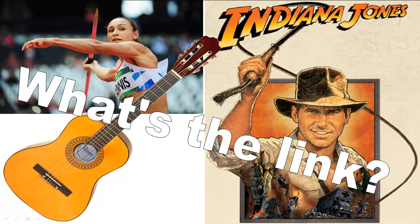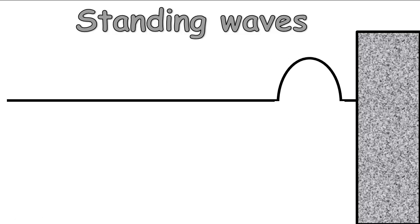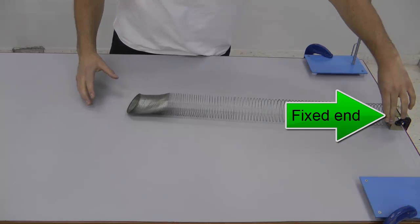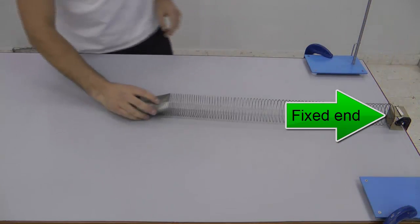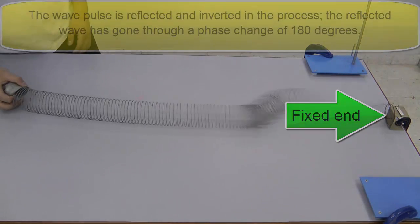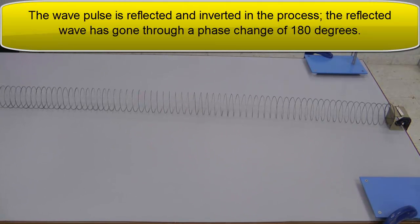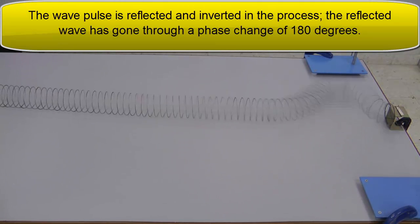During the course of this presentation you'll find out how standing waves link guitar strings, javelins and bullwhips. Understanding what happens on wave reflection is the first step in understanding standing waves. Here a wave pulse is sent down the spring and reflected off the fixed end. It is actually switched upside down or inverted, which corresponds to a phase change of 180 degrees.